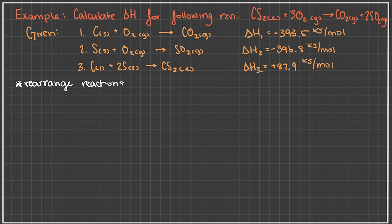Now when we do that, our first reaction, carbon plus O2 goes to CO2, we don't need to do anything with because CO2 is our product and since it's already a product we just leave it untouched, which means that our delta H1 is going to stay the exact same.